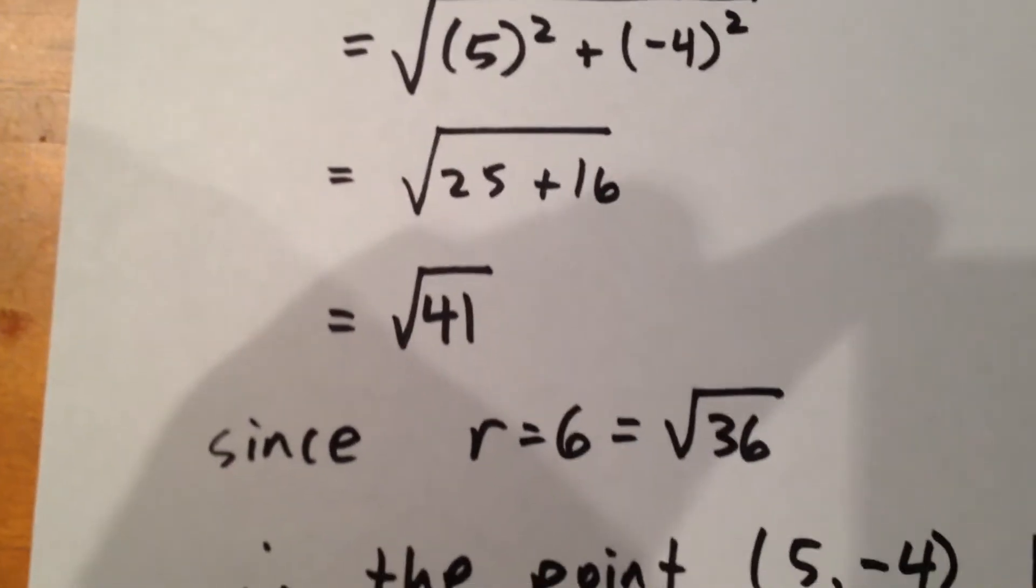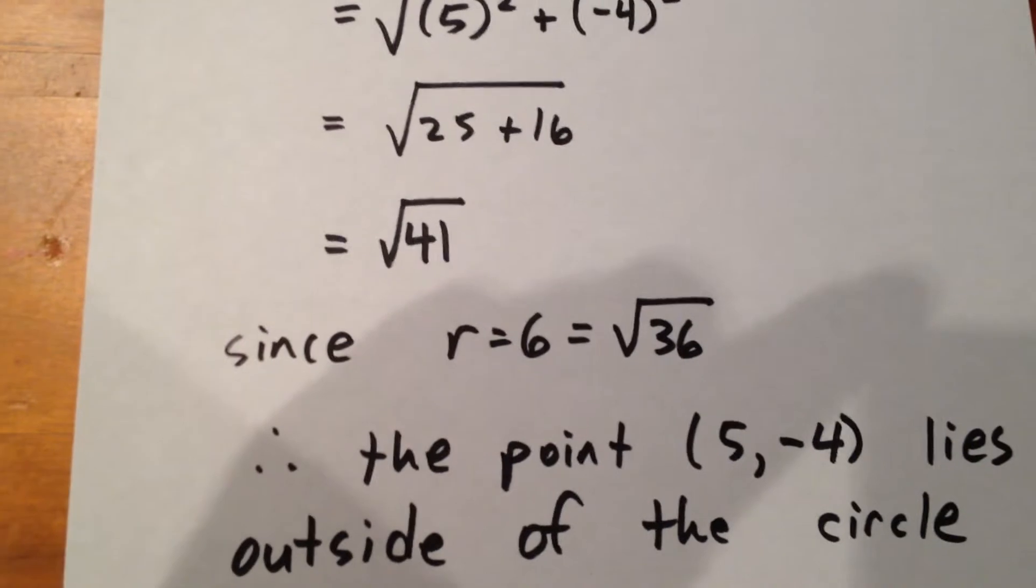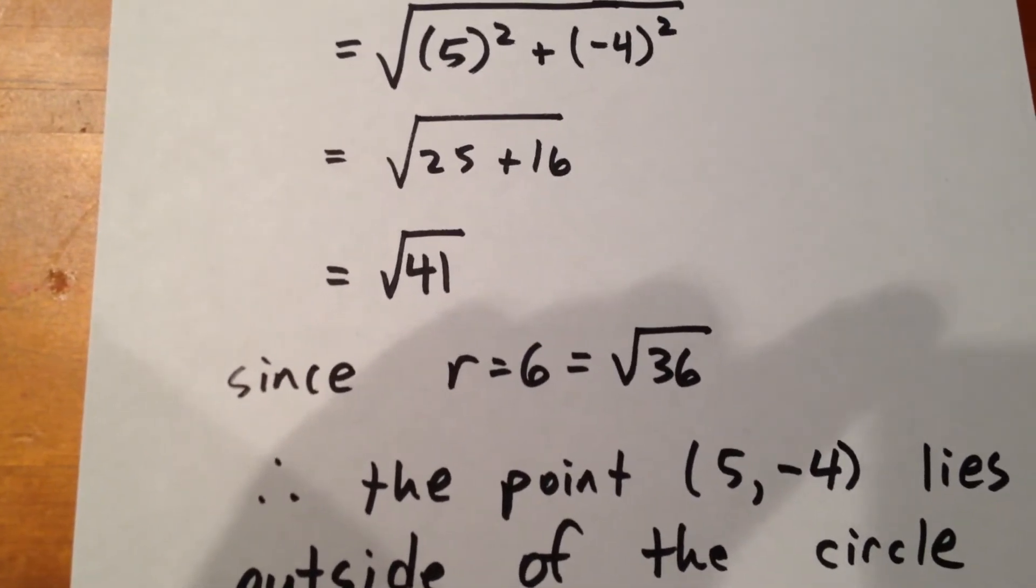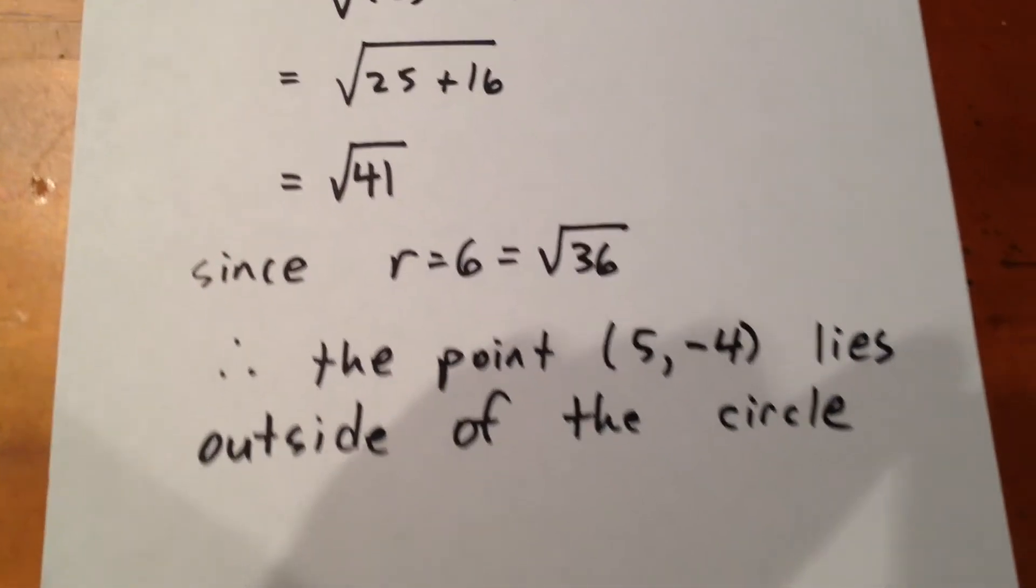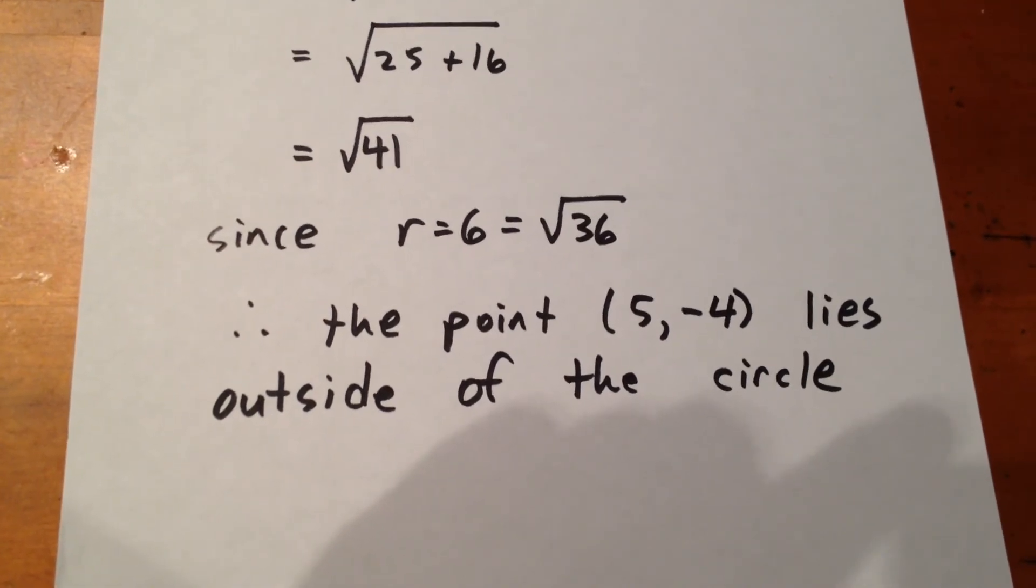Now we know the radius is 6, and 6 can be expressed as root 36. So that would mean that the distance from the point given to the origin is root 41, greater than the radius of the circle, so therefore the point lies outside of the circle.